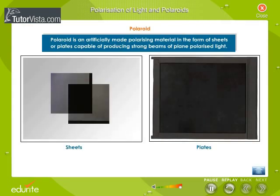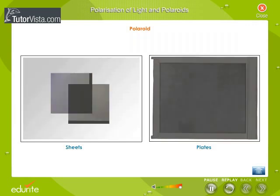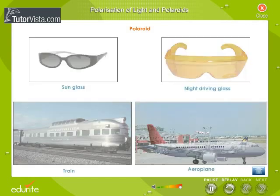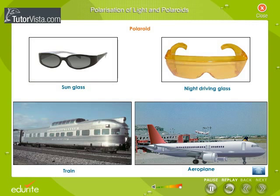Polaroid is an artificially made polarizing material in the form of sheets or plates, capable of producing strong beams of plane polarized light. They are used in sunglasses to cut off the glare present in the bright beam of light, to reduce the intensity of glare during night driving, and in windows of trains and aeroplanes for controlling the intensity of light entering from outside.